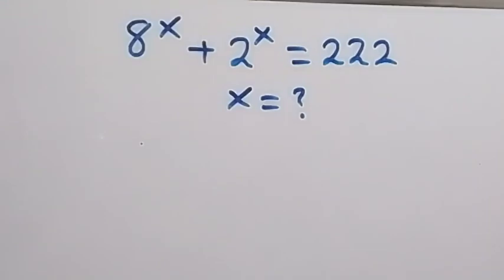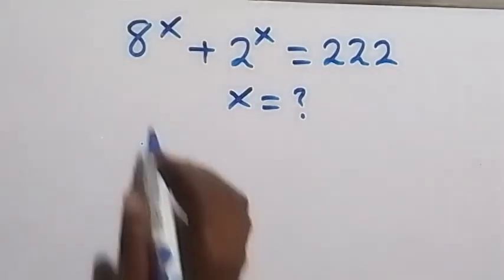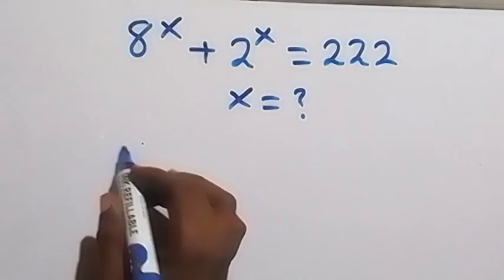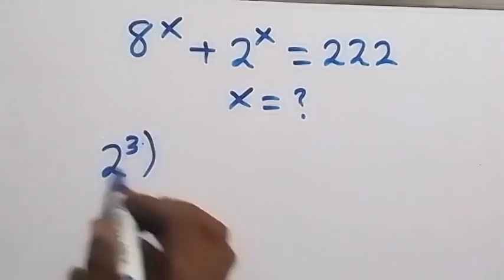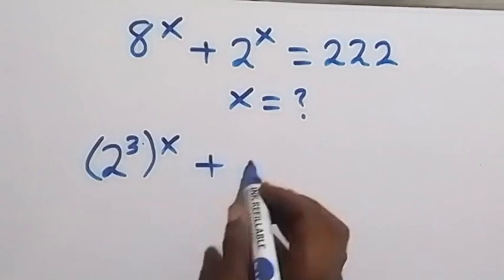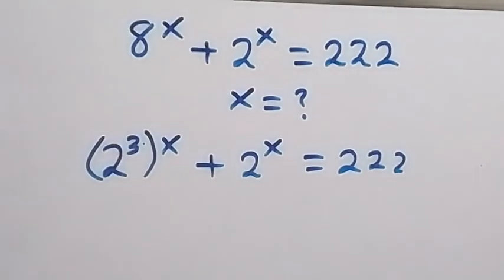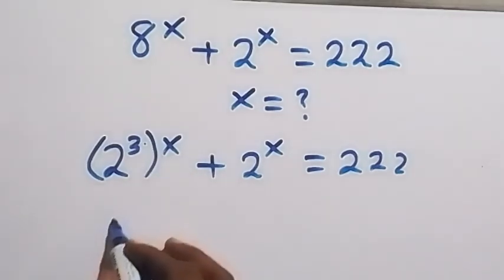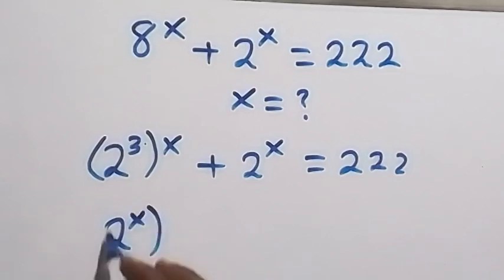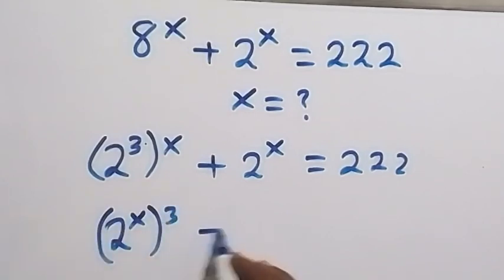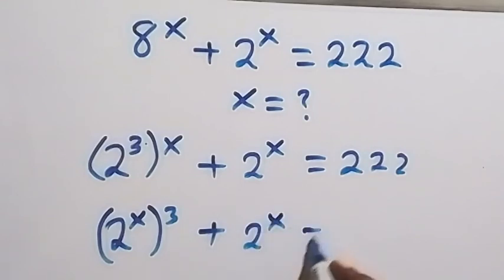Hello, you are welcome. Here we are finding the value of x. Let's rewrite 8^x as 2 raised to power 3, then raised to power x, which equals 2 raised to power 3x. From the law of indices, this can be written as 2 raised to power x, then raised to power 3, plus 2 raised to power x equals 222.